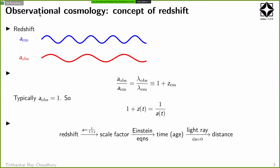The expanding universe has many implications, but one very useful one is the concept of redshift. Because the universe is expanding, so is the wavelength of light traveling through it. Imagine light emitted when the scale factor was A_em with some frequency and wavelength. By the time it is captured by an observer, the universe would have expanded, so the wavelength will be larger, and the frequency smaller — the light shifts to redder wavelengths, hence the name redshift.